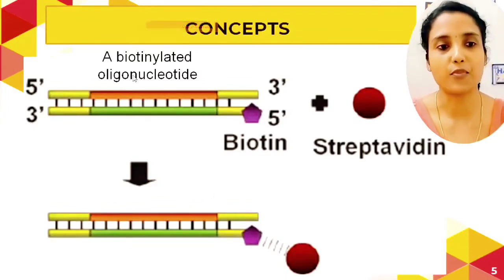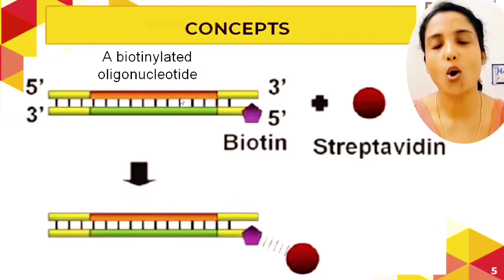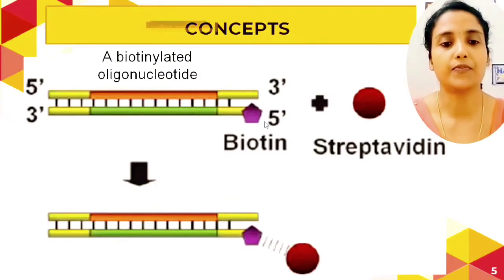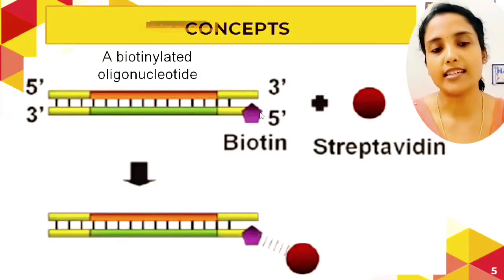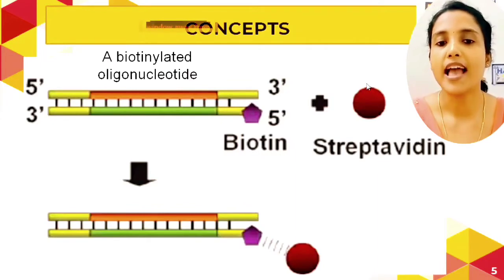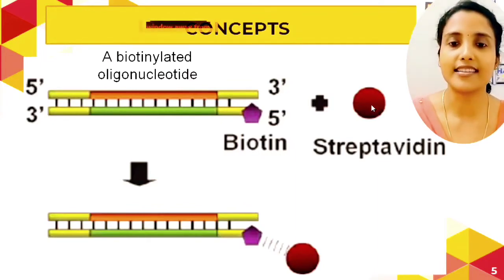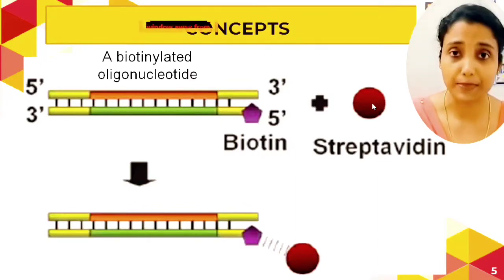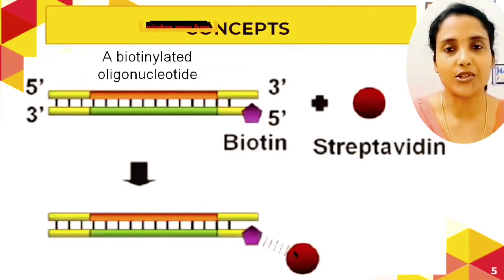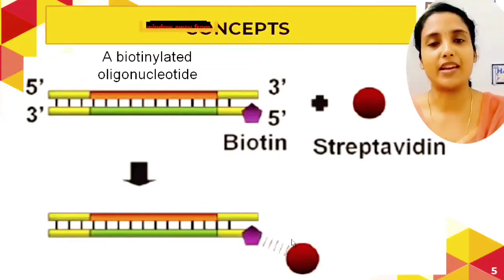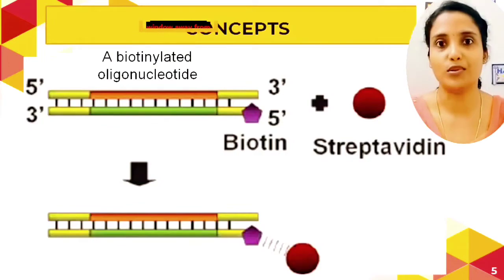This diagram shows a biotinylated molecule — a biotinylated oligonucleotide, that is a DNA fragment, with biotin attached at one end. When it is in the vicinity of streptavidin, it will be specifically attracted to it, allowing biotinylated molecules to be separated out from a pool.